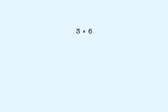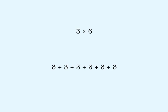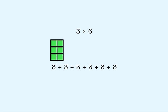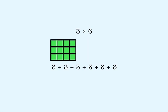Suppose we have the multiplication sentence 3 times 6. We know that 3 times 6 means we add 3 six times. We can represent 3 times 6 using an array like this: 3 plus 3 plus 3 plus 3 plus 3 plus 3.